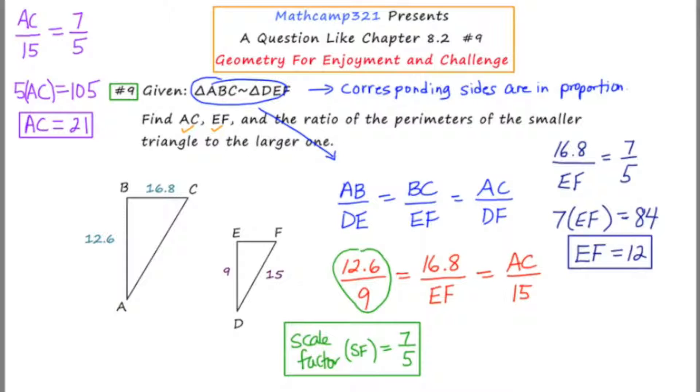So the answer to that third question, the ratio of the perimeters, is going to be 5 to 7. And remember, you can denote a ratio either as a fraction or you can use a colon like this. So this is the answer to the third question.